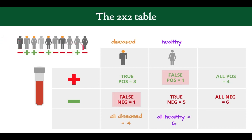From the example, let's fill in numbers. True positives: three. False positives: one. So positives total four. Negatives total six — five true negatives and one false negative. Adding across: four plus six equals ten. Down the columns: four diseased patients — three had a positive test, one had a false negative. Six healthy patients — five had a negative test, one had a false positive.